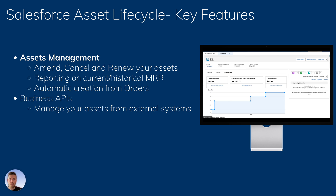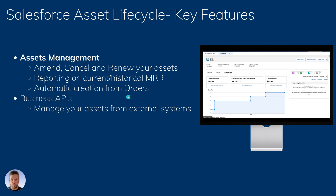Now let's look at Salesforce Asset Lifecycle. Asset lifecycle gives you a new screen on accounts where you can amend, cancel, and renew your assets. It also provides details on current and historical MRR for a given asset. Assets are created automatically through a flow available out of the box, which normally triggers on order activation, but since you control that flow it can happen at any step. All of this is available through the business API, so customers on a different platform — an app, website, or e-commerce platform — could control their own assets.